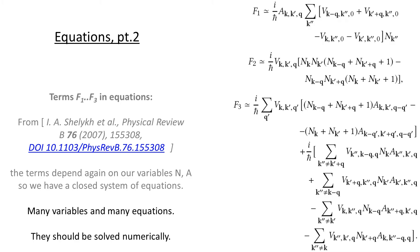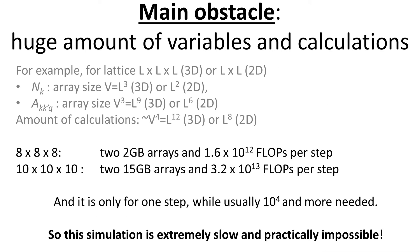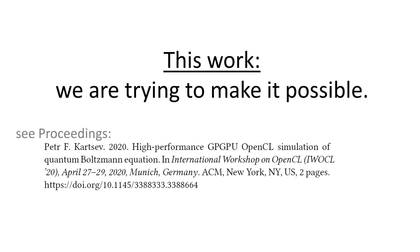They can be solved only numerically. This is the main obstacle hindering the application of the quantum Boltzmann equation: the huge amount of variables and calculations. For a typical not very large system on a grid of size 8×8×8, we have two large arrays of 2 gigabytes and a very large count of calculations required to calculate the right part of the equations. This is not what we can calculate even in several seconds, and for a grid size of 10×10×10 the numbers are even less realistic. Moreover, this amount is needed for each single step of calculations, but usually we need thousands of steps, probably tens of thousands, and even more. So such simulation would be extremely slow and practically impossible — and in this work we are trying to make it possible. Actually, we did it.